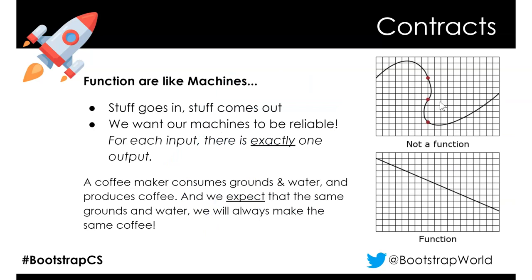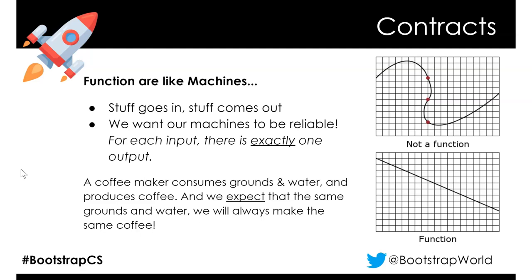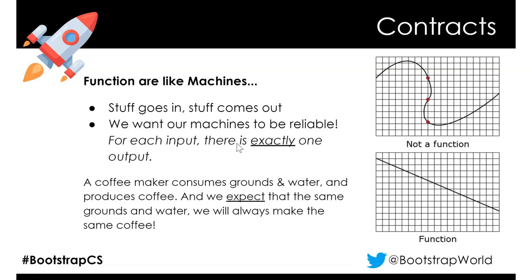Functions, if you remember from algebra, are like machines - stuff goes in, stuff comes out. We want our machines to be reliable, so we use the term function only when there is exactly one output. From algebra or pre-algebra, there's the vertical line test: if a vertical line passes through more than one point on a graph, it's not a function. This curve would not be a function because the same input hits three places.